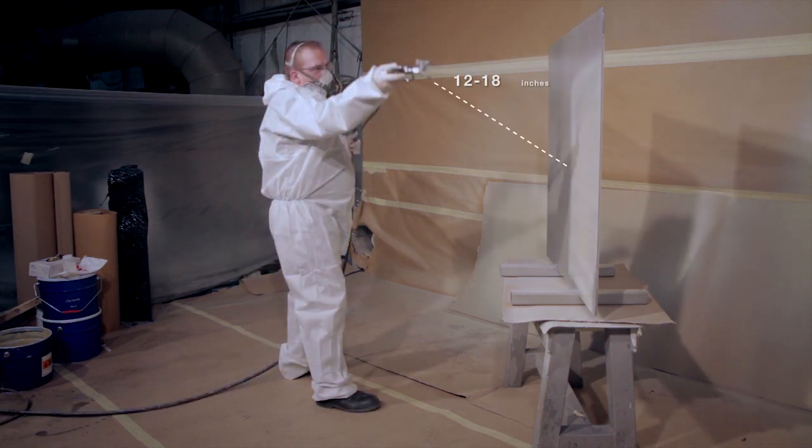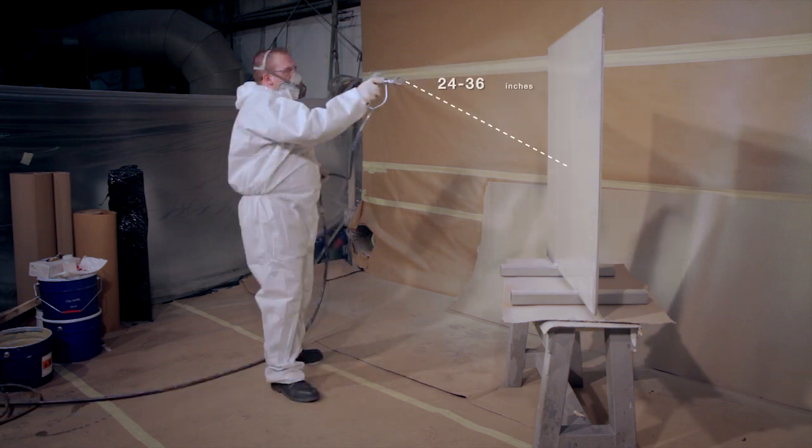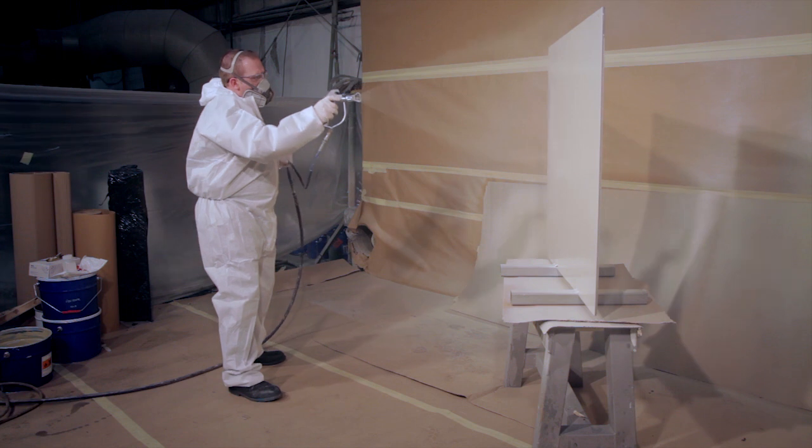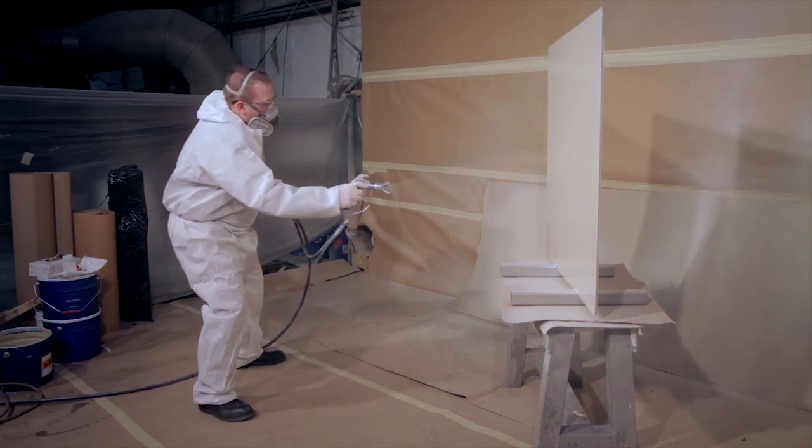Once the applicator has achieved good surface wetting, the distance of the spray gun to the surface is extended to approximately 24 to 36 inches. This avoids exaggerating orange peel and gives more even coverage.